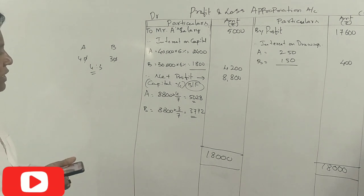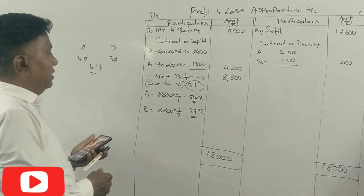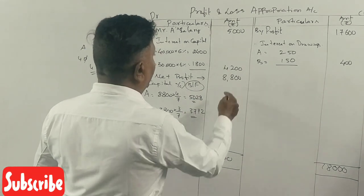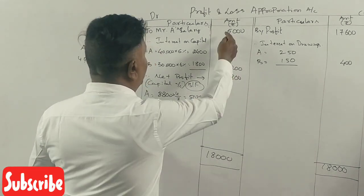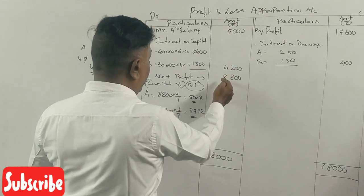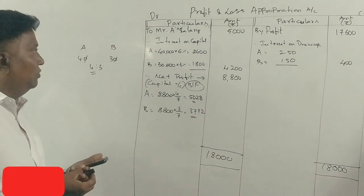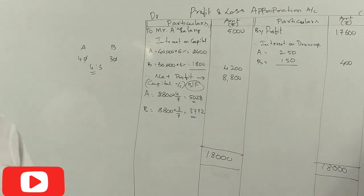So total is Rs. 18,000. This side also Rs. 18,000. Correct. This is 4:3 capital ratio. This should be a 5 marks or 6 marks question.